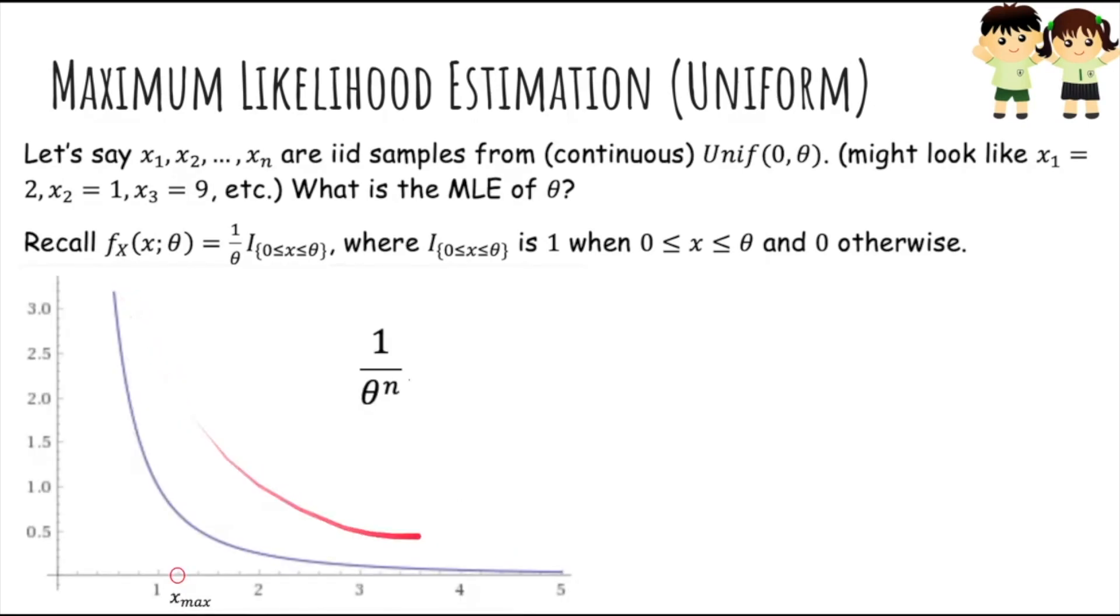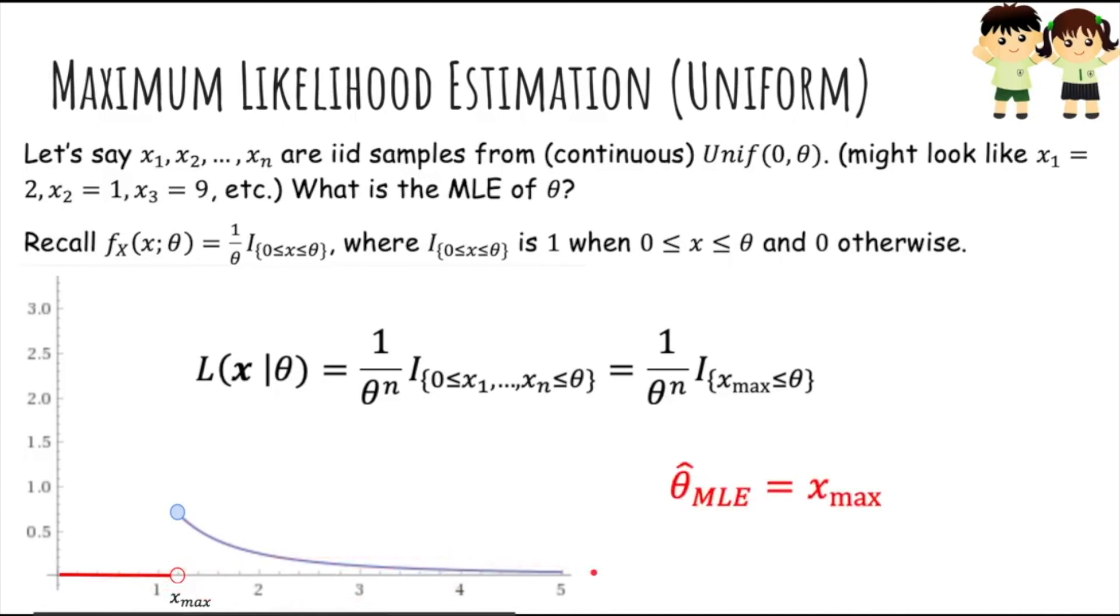So this is a graph of 1 over theta to the n. And notice that the likelihood was 1 over theta to the n times the indicator that all the xis are between 0 and theta. So in other words this can be written as the biggest xi still has to be less than or equal to theta. So theta has to be at least as large as the biggest xi, because if it's not larger than the biggest xi then it would have been impossible for that uniform to produce that larger xi. So therefore this likelihood is only non-zero when theta is bigger than all the xis. So it's non-zero in this section but it's 0 if theta is less than the biggest xi. So therefore the maximum likelihood estimate is just the maximum of the xis. Thank you.